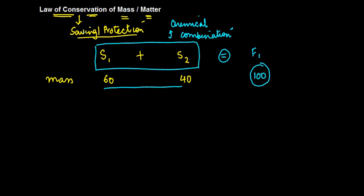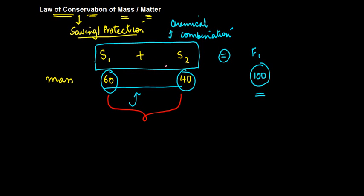Conservation means saving or protection, which says that the mass of these two individual substances — and it could be anything else as well which might be used to do this chemical combination — is always going to be equal to the mass of what is formed as a result of this chemical combination. Now S1 and S2, which get together in a chemical combination, are known as the reactants, because they are the ones who are reacting together and combining together. And what is formed is known as the product.